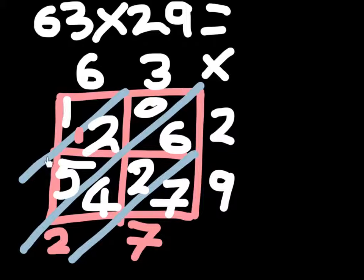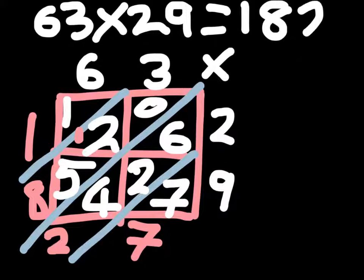Plus five, which should be eight. And then we don't have to carry anything, so it's just going to be a one. So your answer should be 1,827.